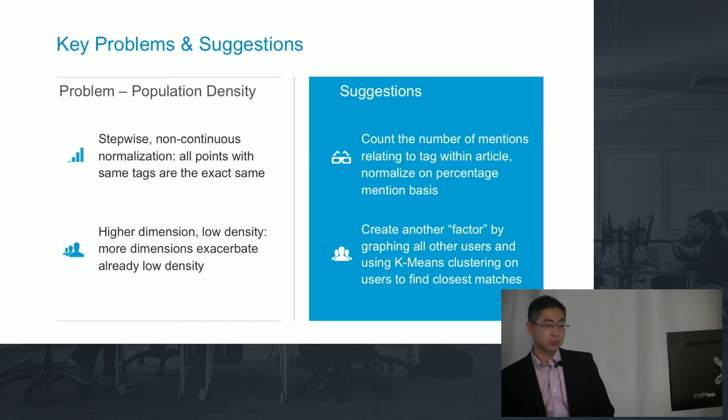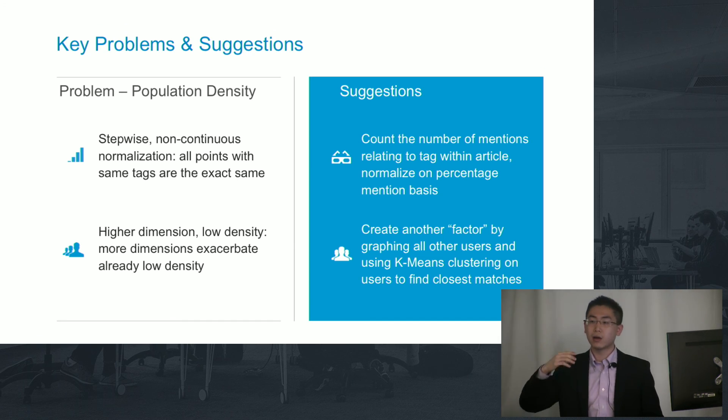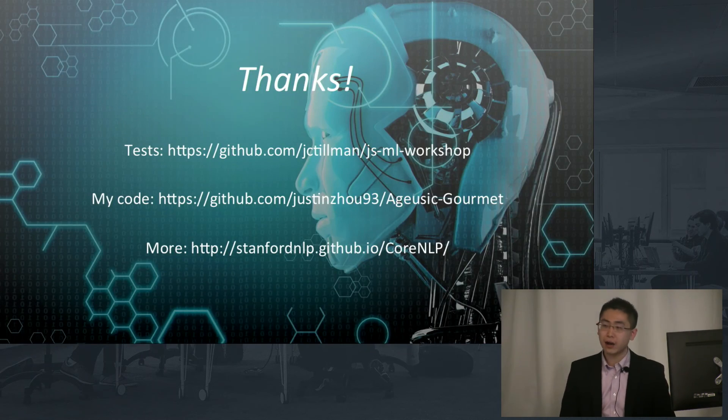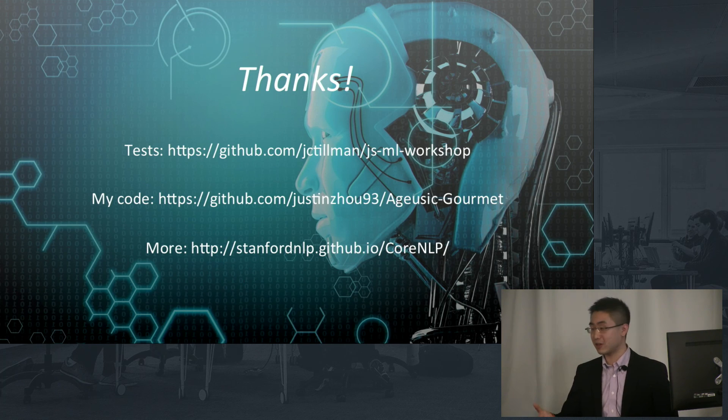And another thing that I can do is basically create another factor. Because right now I'm only plotting users against articles. If I plotted users against other users, what I can see is a much more clear cluster. And you'll see K-means work a little bit better, along with a couple of other tweaks that I don't have time to go into. But if you have an interest in pursuing this, obviously come talk to me afterwards.